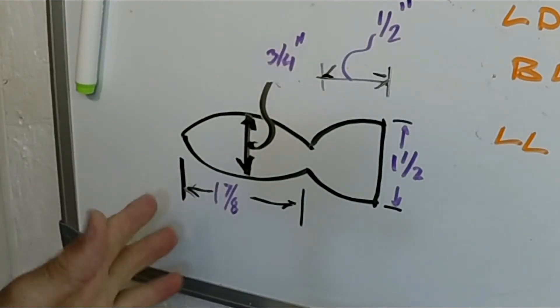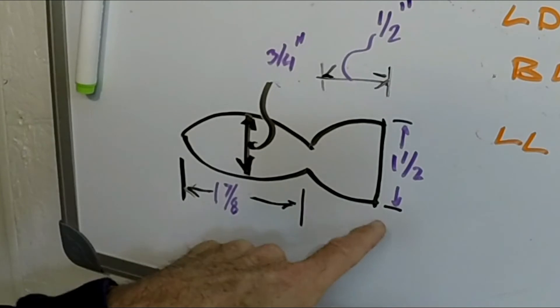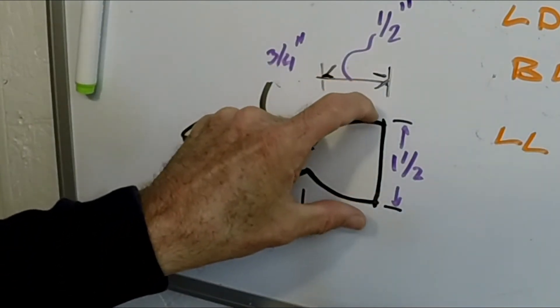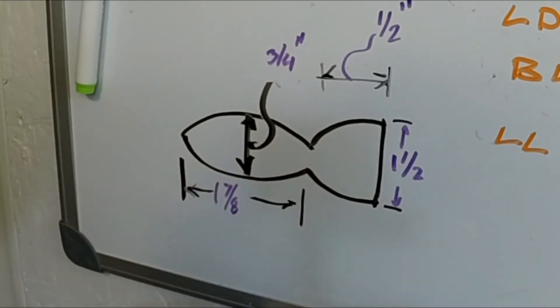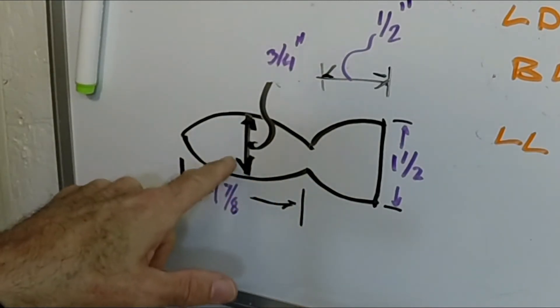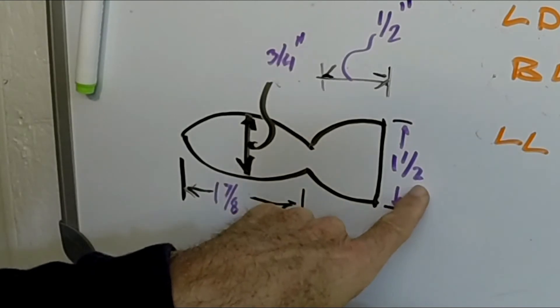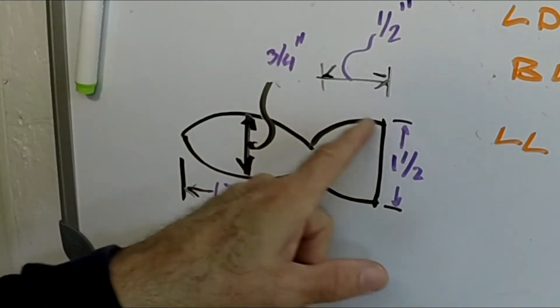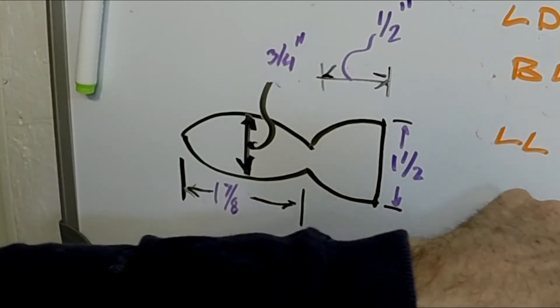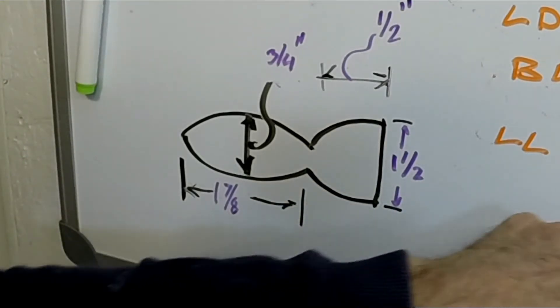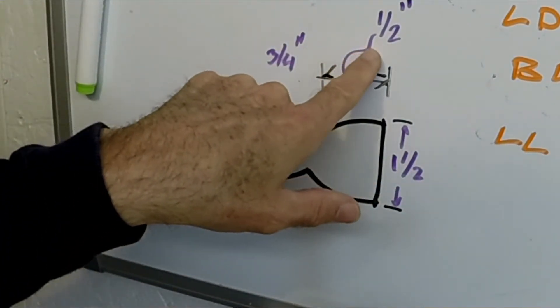The next thing I need to figure is what the diameter of this bell or this lip portion is, and that's going to be twice the diameter of the body, so that's one and a half. And then the length from here to here, which is the lip length LL, is the body diameter divided by 1.5 or one and a half, and that gives me a half an inch.